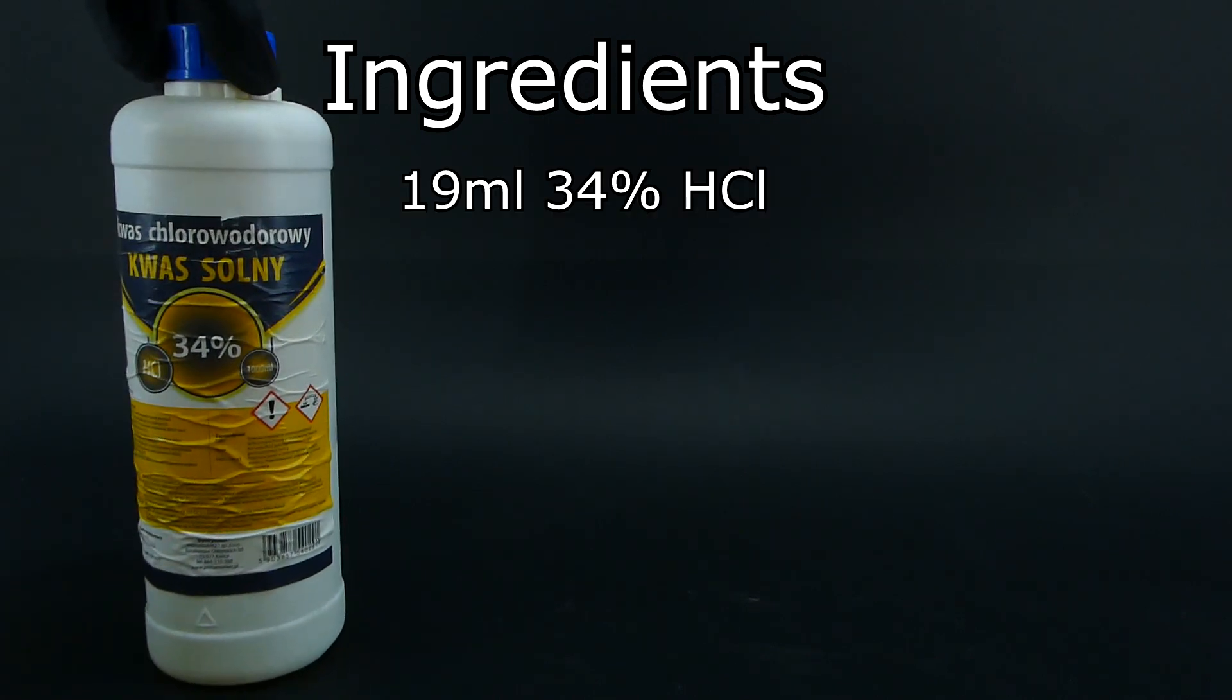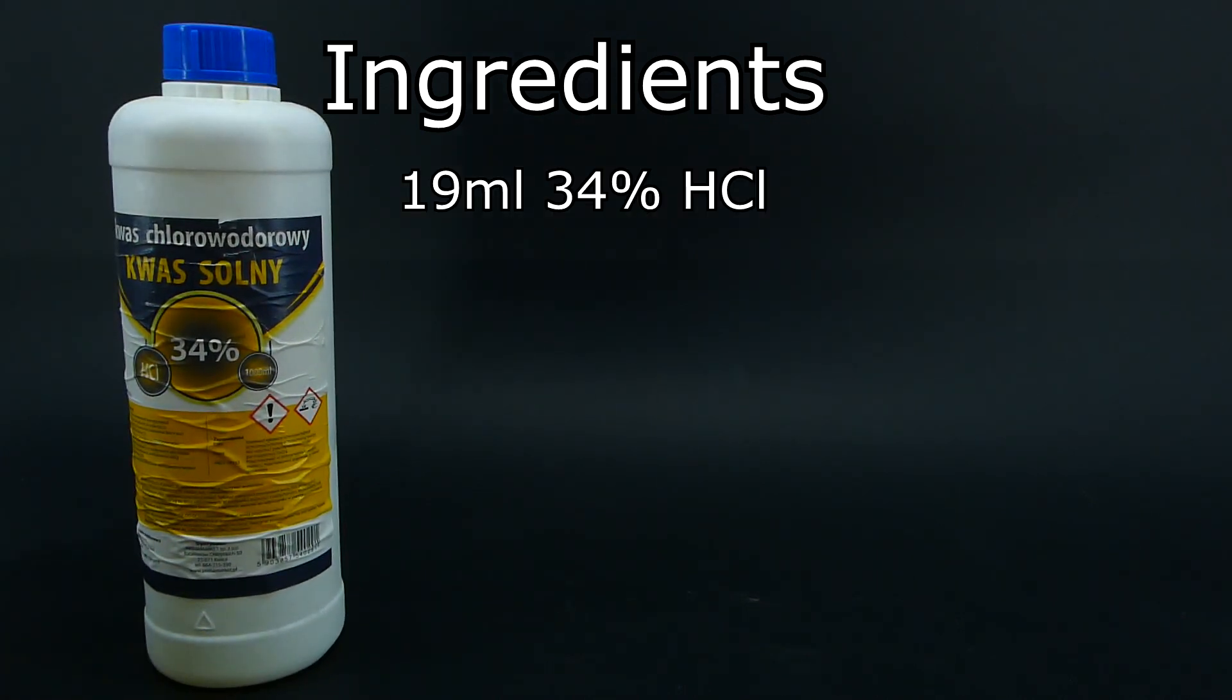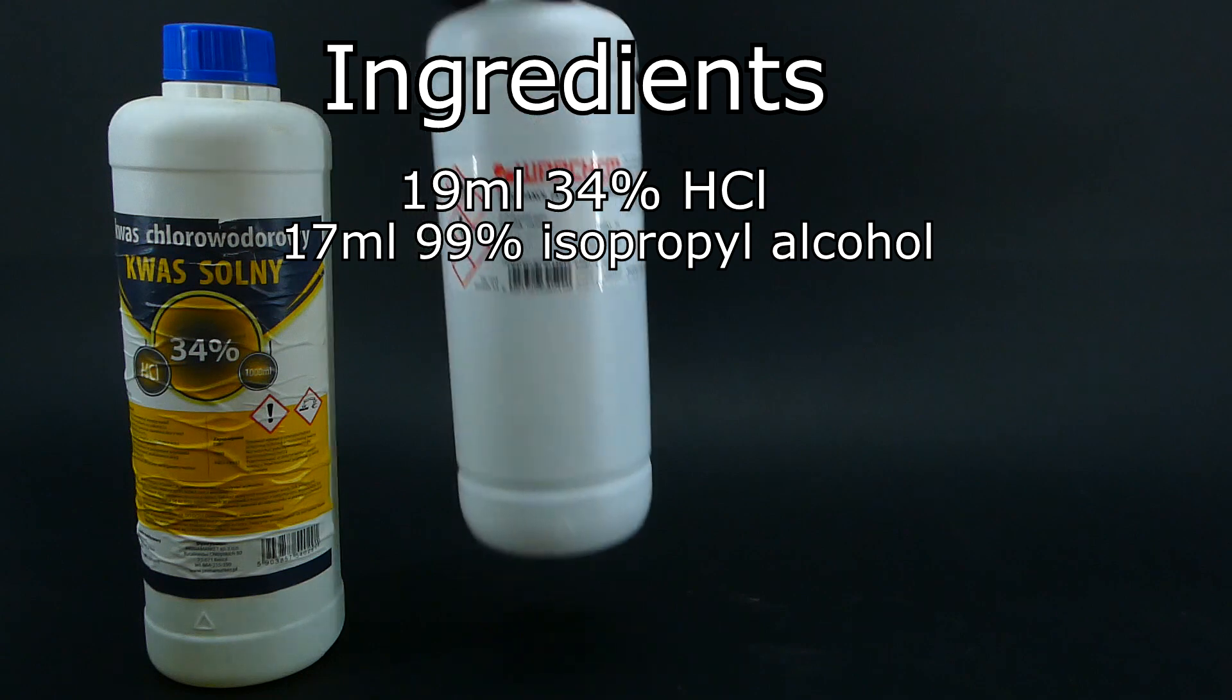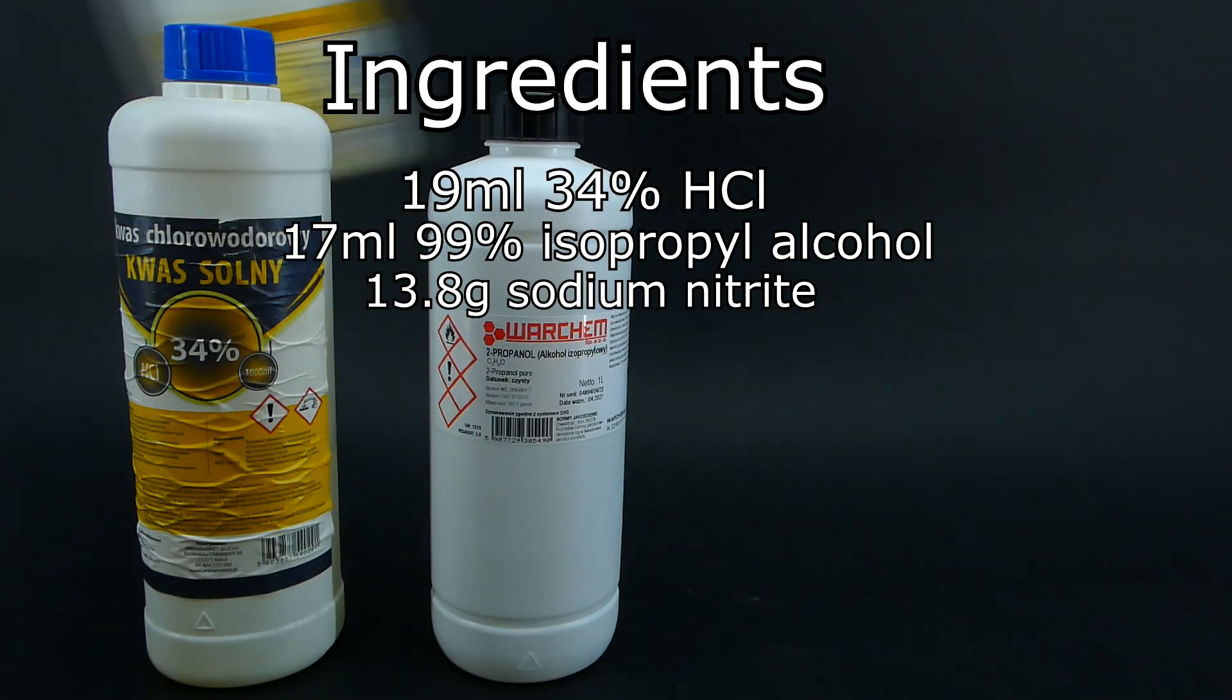The chemicals needed for this experiment are quite simple. All that I am going to need is 19ml of 35% hydrochloric acid, 17ml of 99% isopropyl alcohol, 13.8g of sodium nitrite and some distilled water.